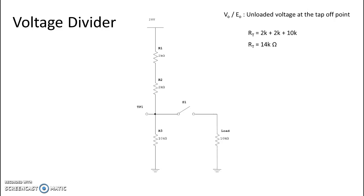Next would be total current. Because remember, we're looking for an amount of voltage at our test point, at our tap off point. So in order to get voltage, we're going to need current. So we can take current and multiply it by our ohmic value. So total current, we know is voltage divided by resistance. So we take 28 divided by our total resistance of 14k and we get a total current of 2 milliamps.